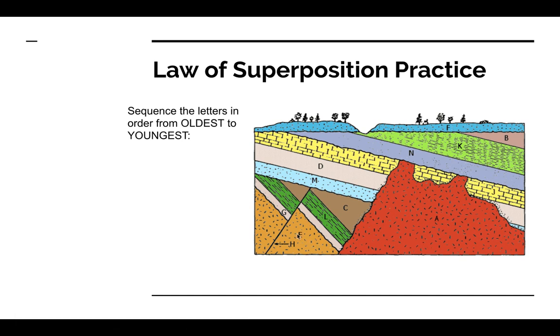E would be the oldest, followed by G, then L, and then C. Now you can see that these rock layers are offset. So after C was laid down, then we have this fault labeled H. So that broke through that rock. Now what comes after this fault H?